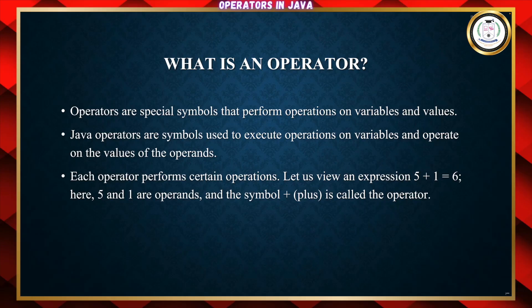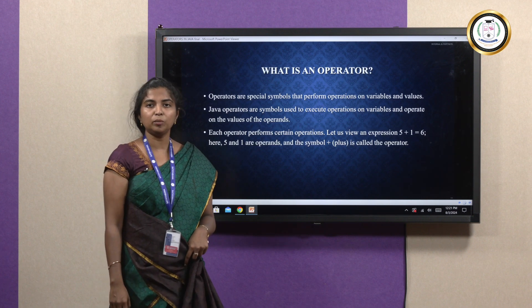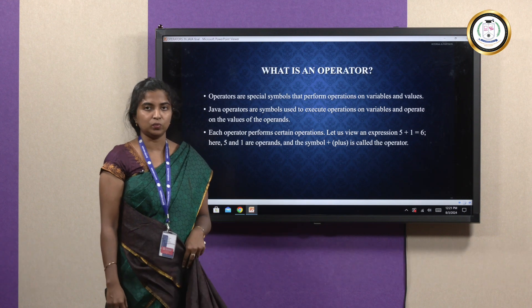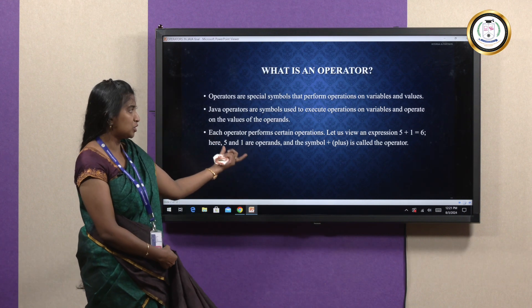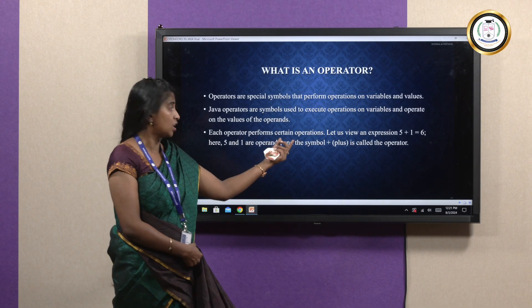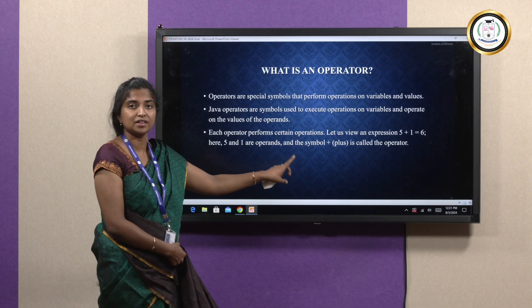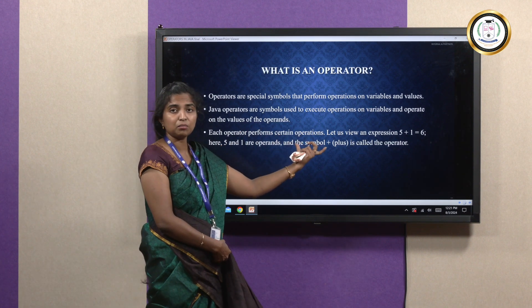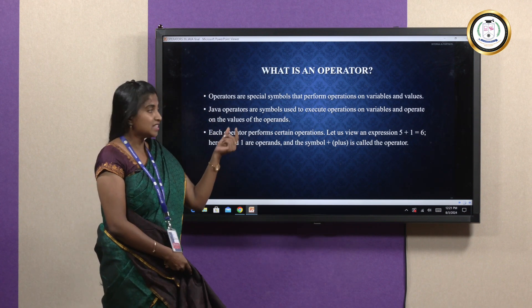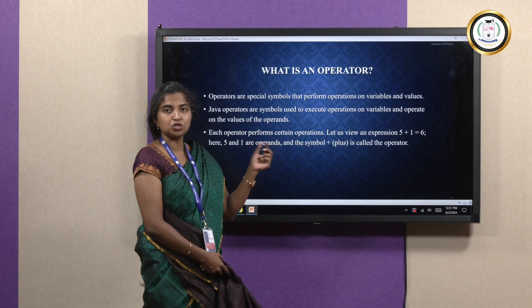What is an operator? Operators are special symbols. They have two components: one will be an operand, and the other will be an operator. Operands are values, and operators are functions associated with them. Looking into a small example: 5 plus 1 is equal to 6, where 5, 1, and 6 are operands, and plus and equal to are operators.